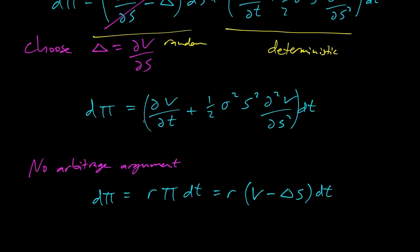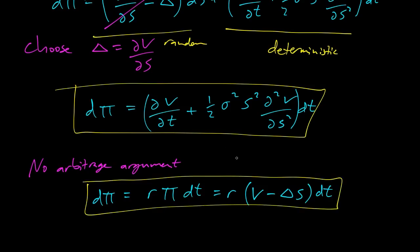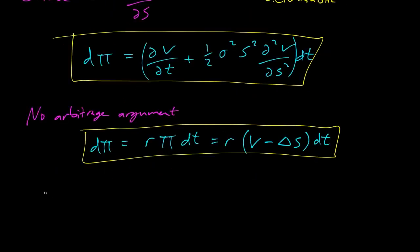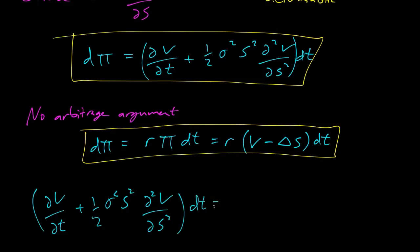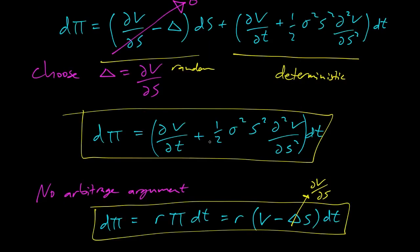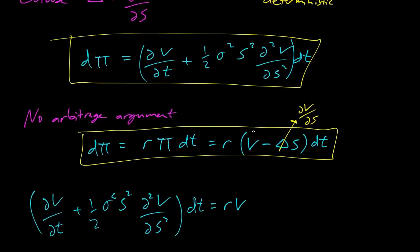We now have two formulas for d-pi, so let's put them together. On the left: partial with respect to t plus one-half sigma squared S squared, second partial with respect to S, times dt. On the right: r times V minus r times partial of V with respect to S times S, all times dt. Substituting in our expression for delta — which is partial of V with respect to S — we get r V minus r partial of V with respect to S times S.